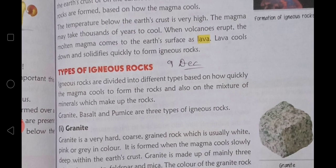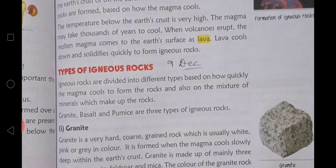Now, types of igneous rock. Igneous rocks are divided into different types based on how quickly the magma cools to form the rocks and also on the mixture of the minerals which make up the rock.